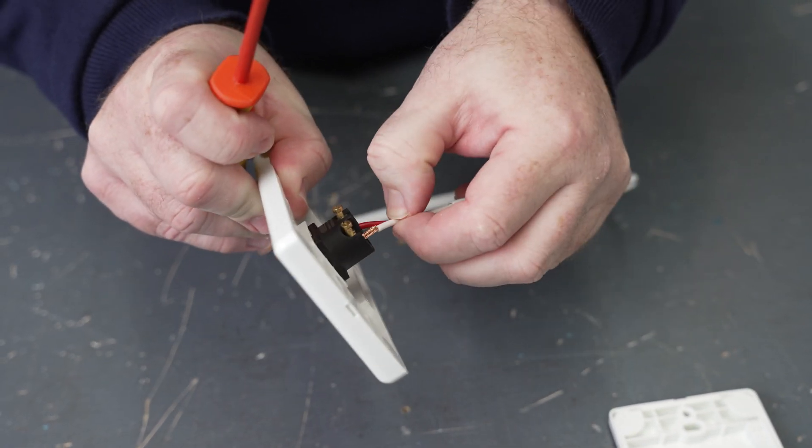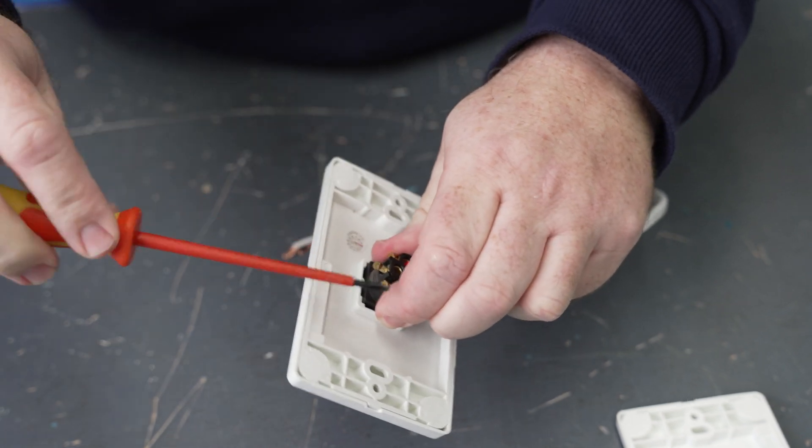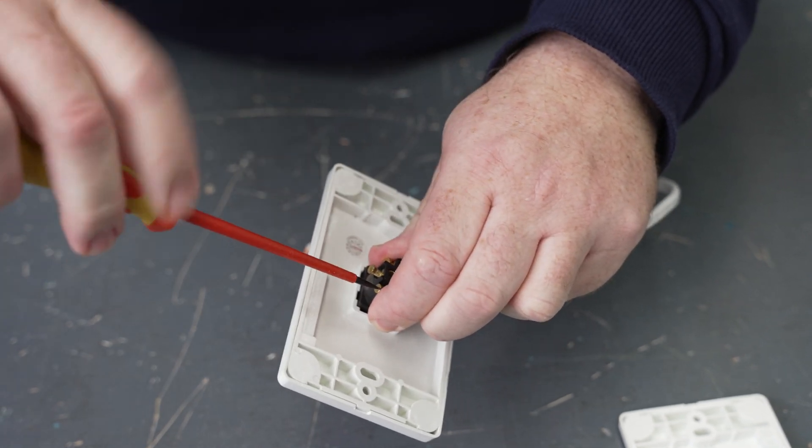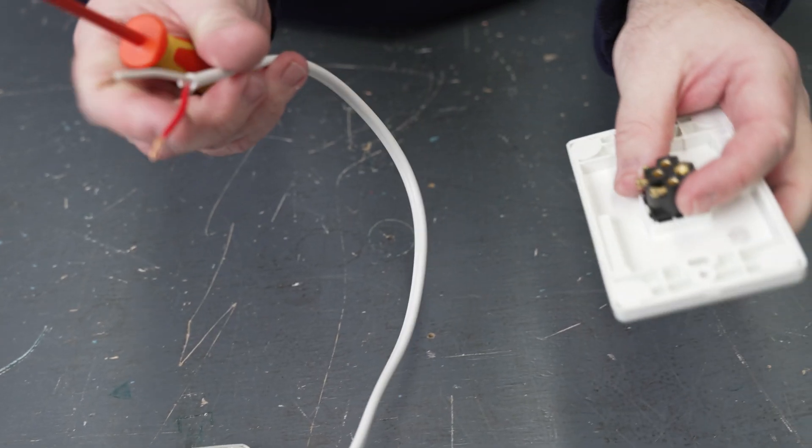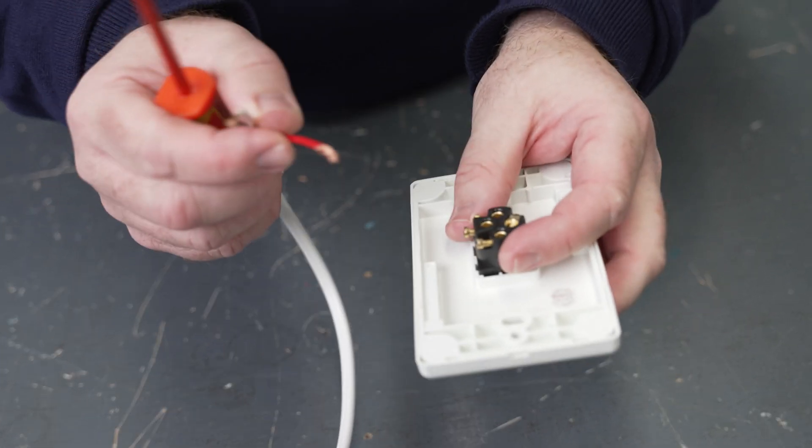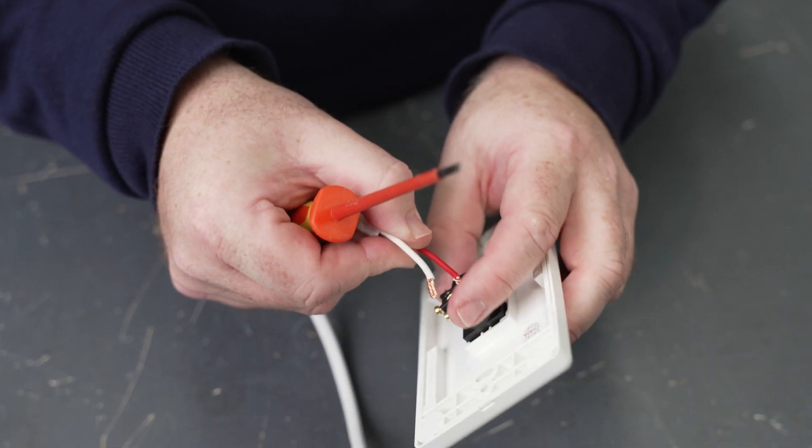Taking your white conductor, do the same, putting it into the number two. Taking the other end of the strapper cable, we'll do the same thing again, remembering that we want the red conductor to go into the number one terminal.